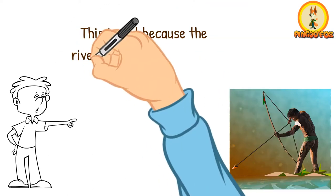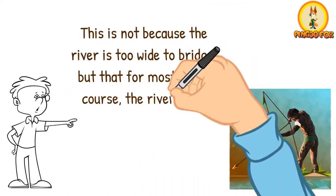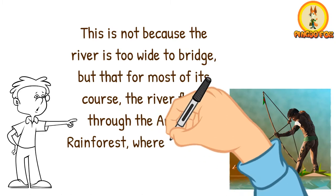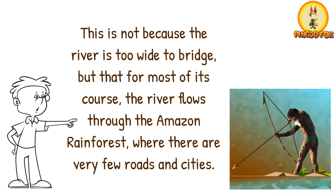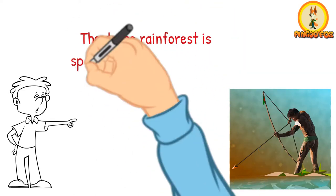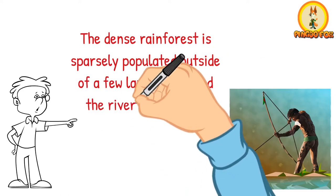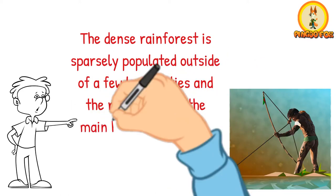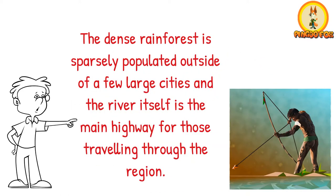This is not because the river is too wide to bridge, but that for most of its course the river flows through the Amazon rainforest, where there are very few roads and cities. The dense rainforest is sparsely populated outside of a few large cities, and the river itself is the main highway for those traveling through the region.